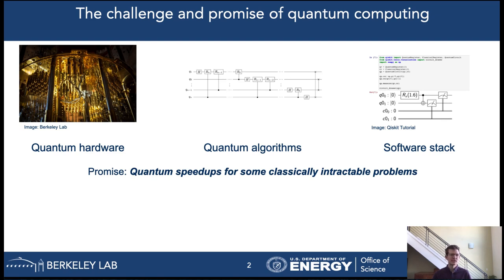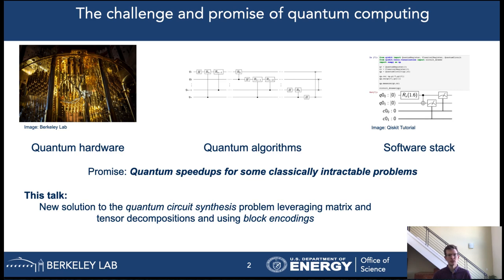The promise of quantum computers is that they have the potential to speed up some computational problems and solve them faster than their classical counterparts can. One of the most interesting applications out there where we achieve a speedup over the best-known classical algorithms are quantum simulations in chemistry. In this talk, however, I will focus on one of the challenges in quantum computing that is called circuit synthesis. The method that we use to solve this problem leverages some concepts from tensor decomposition techniques and uses the notion of block encodings.